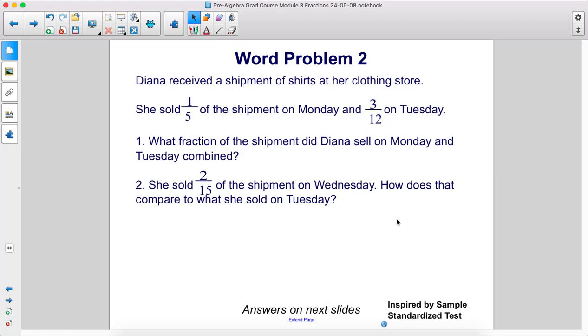She sold two-fifteenths of the shipment on Wednesday. How does that compare to what she sold on Tuesday?